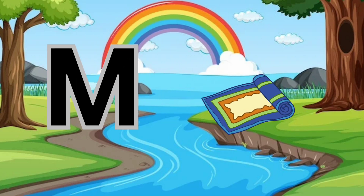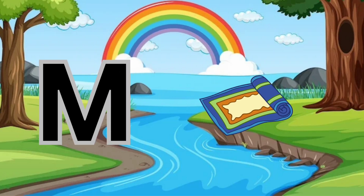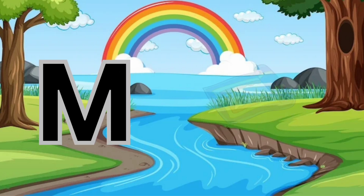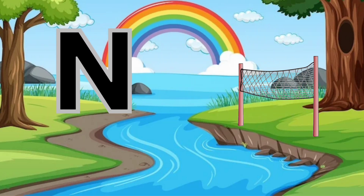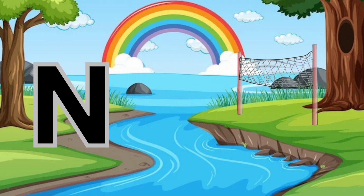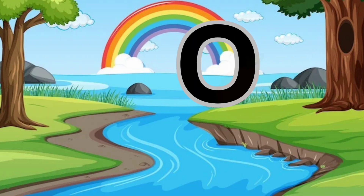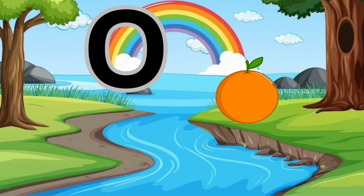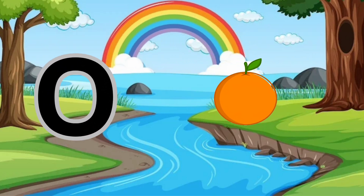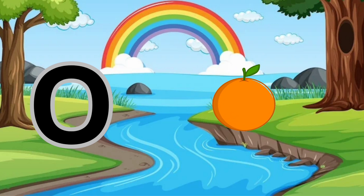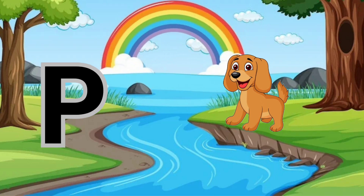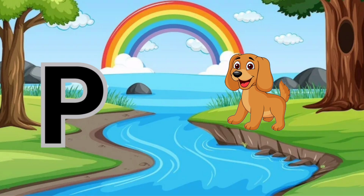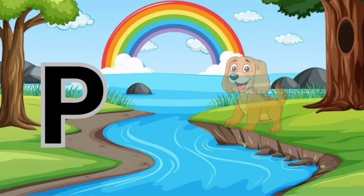M is for Mat, M-M-Mat. N is for Net, N-N-Net. O is for Orange, O-O-Orange. P is for Pet, P-P-Pet.